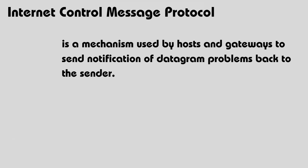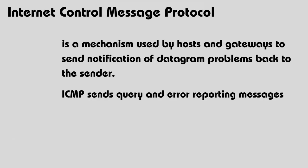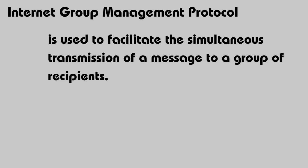Internet Control Message Protocol (ICMP) is a mechanism used by hosts and gateways to send notification of datagram problems back to the sender. It sends query and error reporting messages. Internet Group Management Protocol (IGMP) is used to facilitate the simultaneous transmission of a message to a group of recipients.